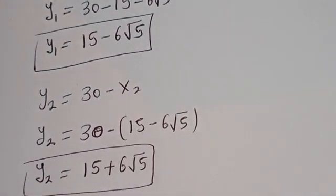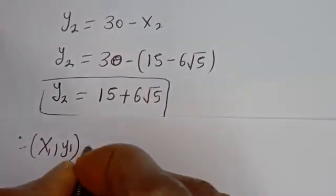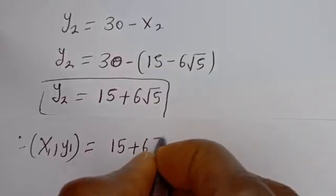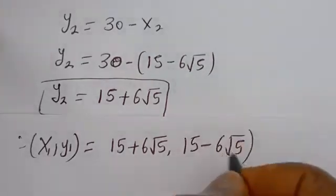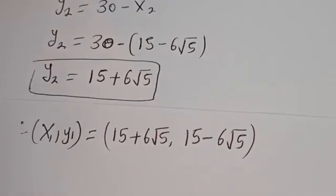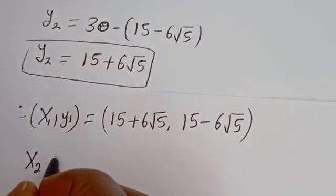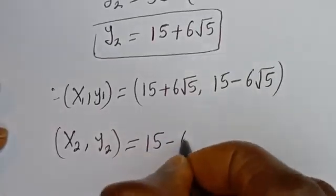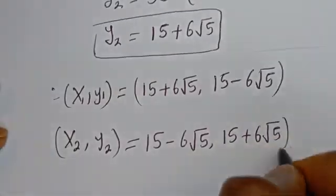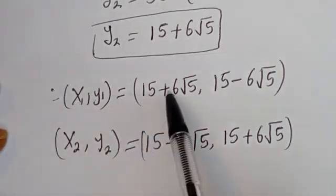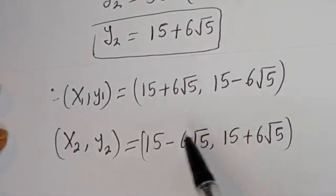We can check to confirm. Therefore, the solution pairs are: x1 comma y1 equals (15 plus 6 root 5, 15 minus 6 root 5), and x2 comma y2 equals (15 minus 6 root 5, 15 plus 6 root 5). We can see that x1 equals y2 and y1 equals x2. Let's check to confirm if this answer is right.